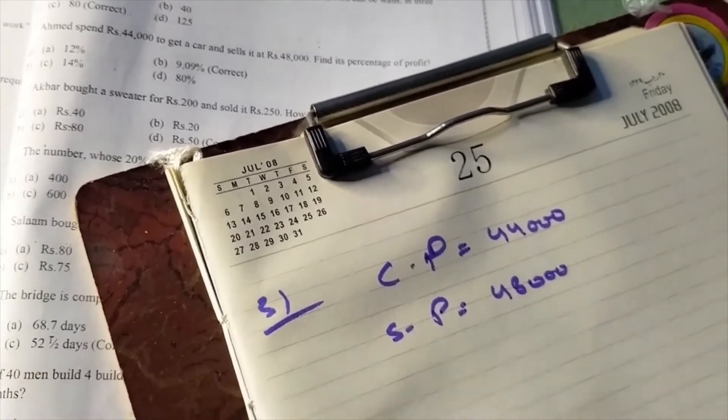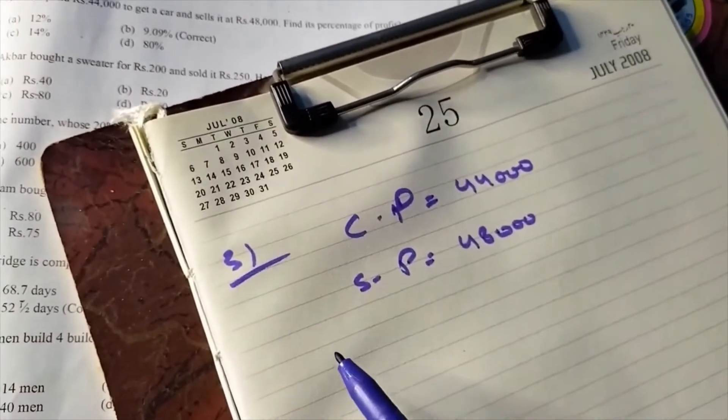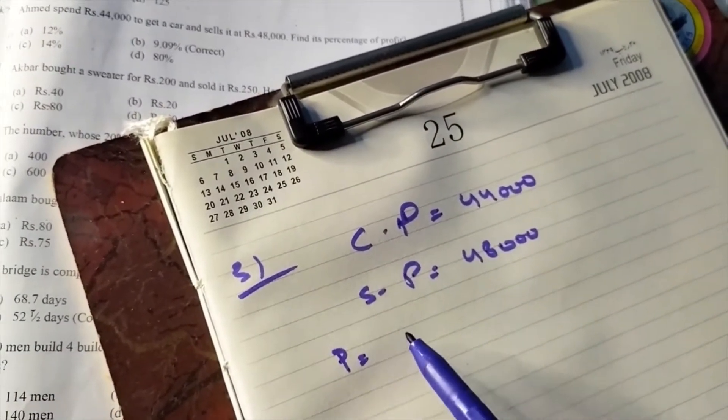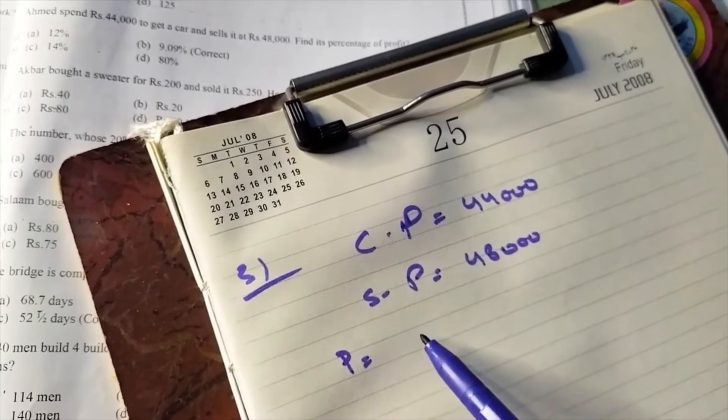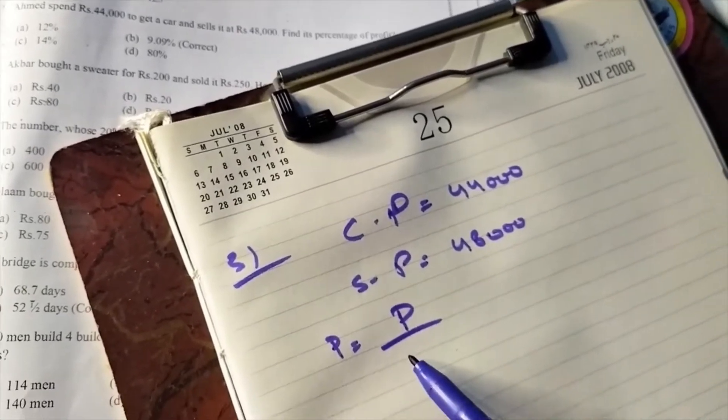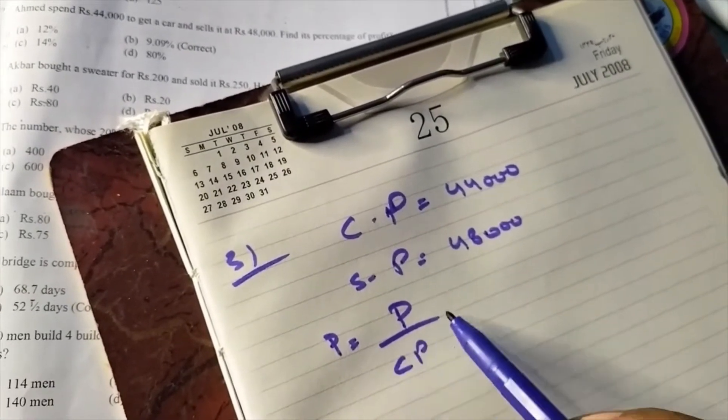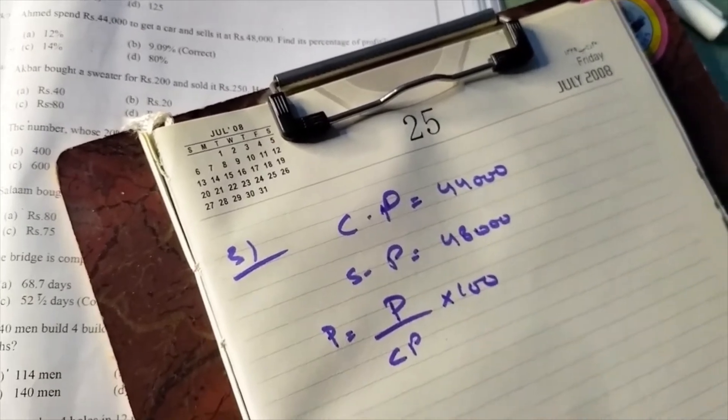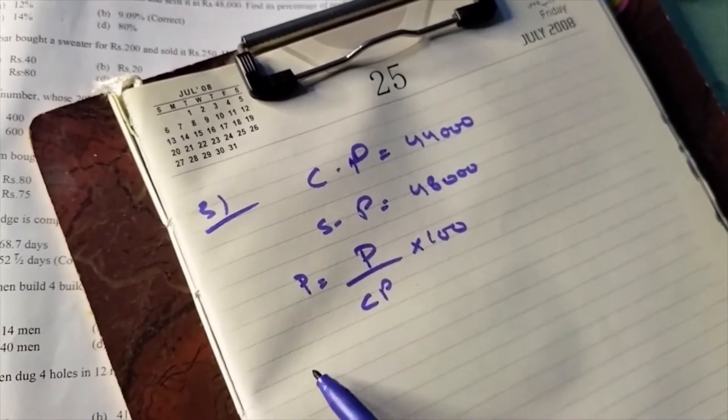Just remember this, and the formula to find profit percentage is: profit upon CP multiply by 100. But here, first we need to find the profit amount.